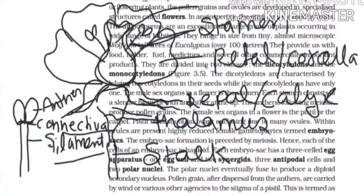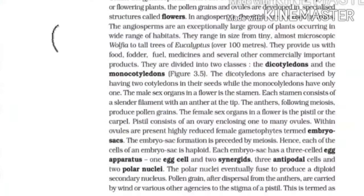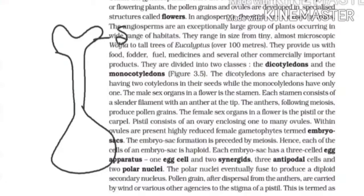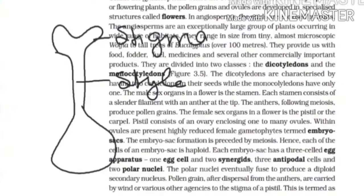These are the female reproductive organ, which is known as the carpel. The carpel has three main parts: stigma — a portion which provides the attachment site for the male reproductive system; style — a portion which provides the pathway to transfer the male gametes to the female gametes; and the ovary.